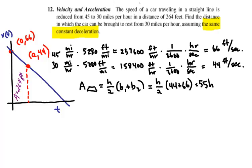And so we know that 55h has to equal 264. And so the height, or the distance between time t equals zero to t equals A, is 264 over 55.